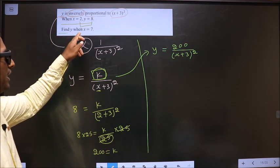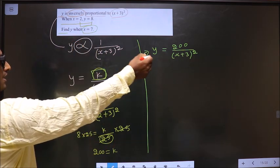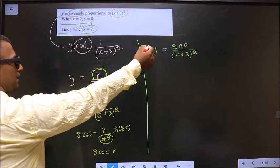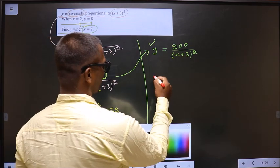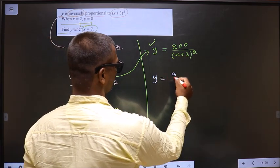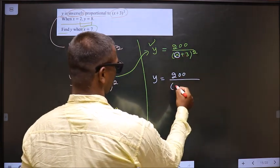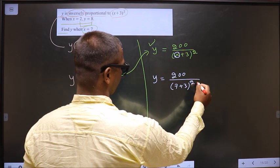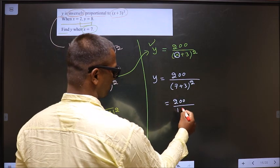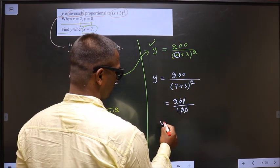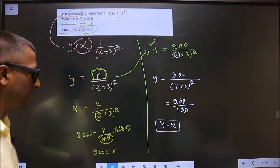Find y when x equal to 7. Now, you replace x equal to 7 in the equation, you will get y. So y equal to 200 by, in place of x, 7. So 200 by 7 plus 3 is 10, 10 square is 100. So cancel the zeros. You get y to be 2. This is our answer.